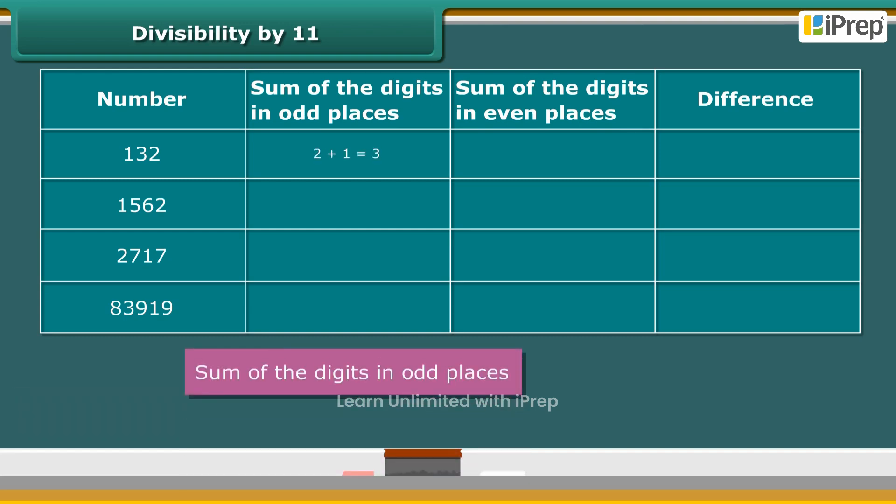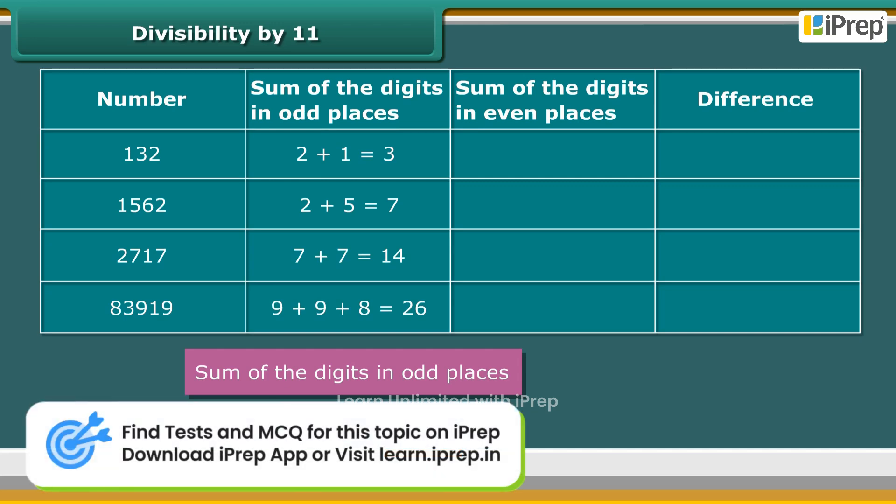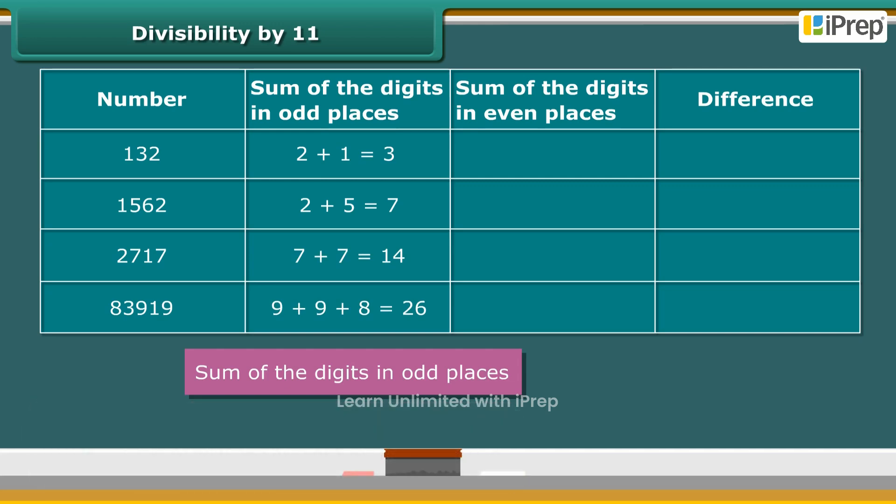Consider the sum of the digits of these numbers in the odd places, starting from one's place. Likewise, consider the sum of the remaining digits or the digits in the even places.